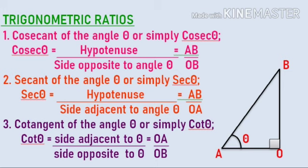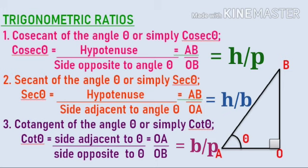These three ratios are the inverse of the first three ratios. So cosec theta equals hypotenuse by perpendicular, which is the inverse of sine theta. Sec theta equals hypotenuse by base, which is the reciprocal of cos theta.